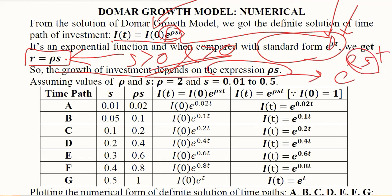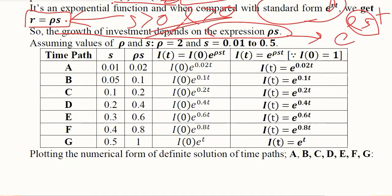Let us see numerically how it can happen. We have assumed the values of ρ and s. We assumed that the value of ρ is 2, whereas we experimented with the value of s and assume that it can vary from one level to another.